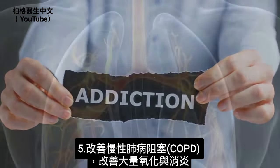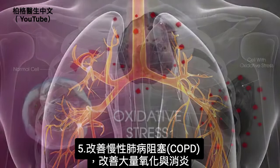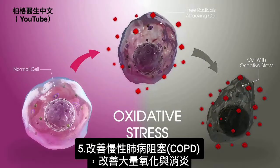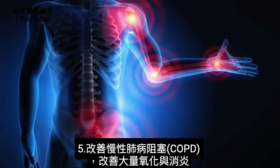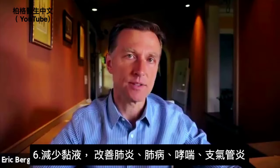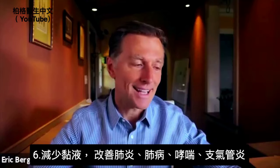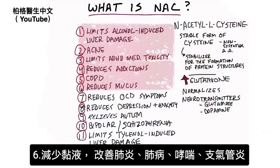It can help COPD, which is chronic obstructive pulmonary disease, because with this condition there's a lot of oxidation and inflammation going on. NAC also helps reduce mucus, so it's good for pneumonia, lung issues, asthma, and bronchitis.